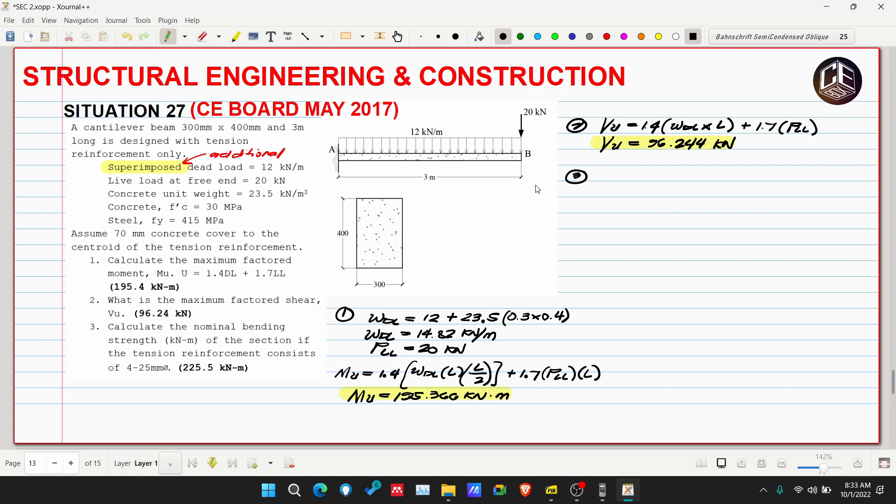Number 3: Calculate the nominal bending strength in kilonewton meters of the section if the tension reinforcement consists of four 25 mm diameter bars. This number 3 is under reinforced concrete. Now let's place the four 25 mm diameter bars. These will be at the top. Why? Because the bending in a cantilever is negative. When bending is negative, the top is subjected to tensile stresses and the bottom is under compression. We place the steel where the tension fiber is.